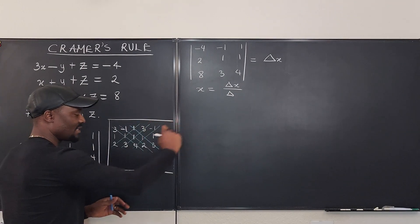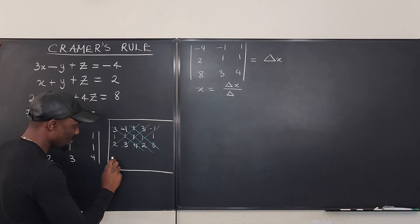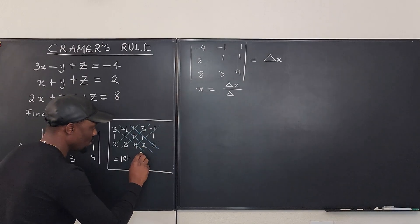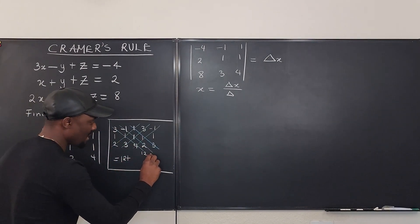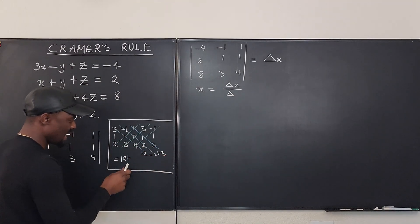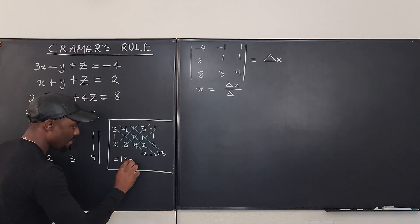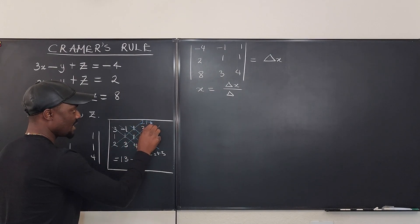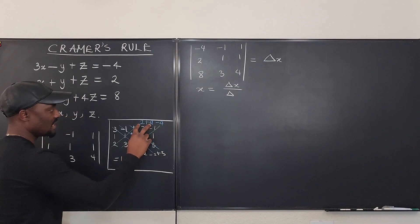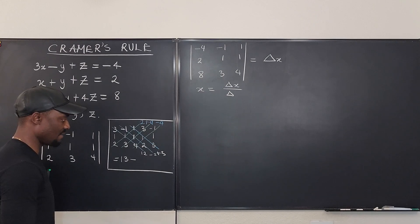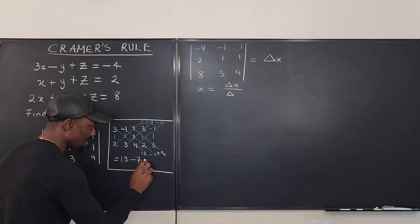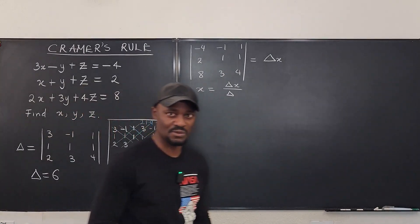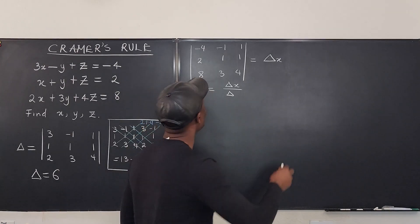The blue diagonals going down are positive, and you subtract the green diagonals. So: 3×1×4 = 12, then going the next diagonal gives -2, and the next gives +3; that's 12 - 2 + 3 = 13. For the green diagonals going up: 2 + 9 - 4 = 11 — wait, that's 7. So the main determinant is 13 - 7 = 6. The determinant of the coefficient matrix equals 6.